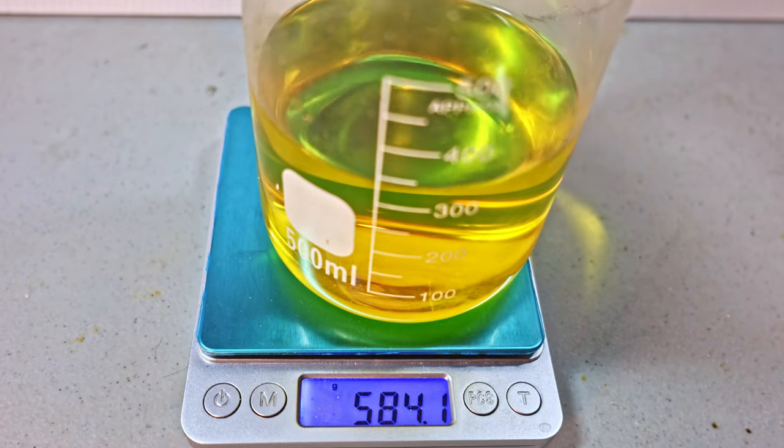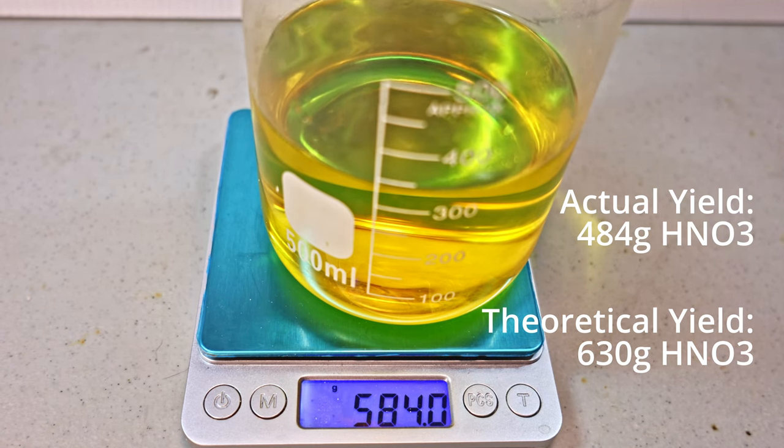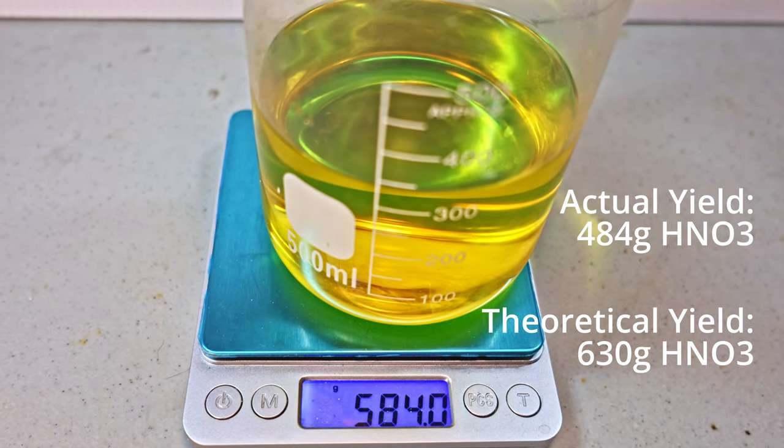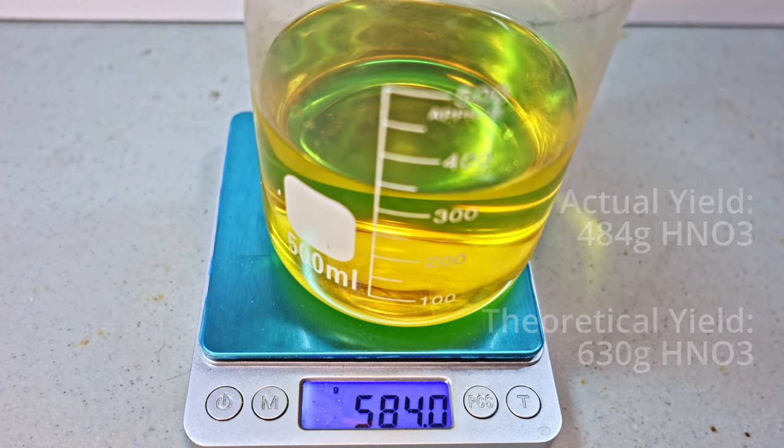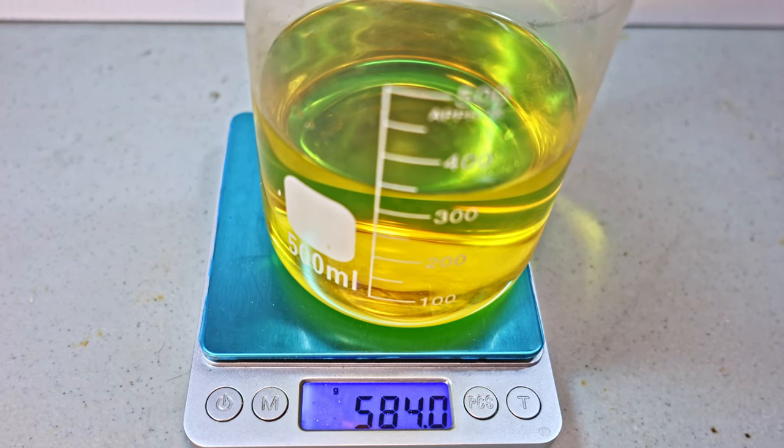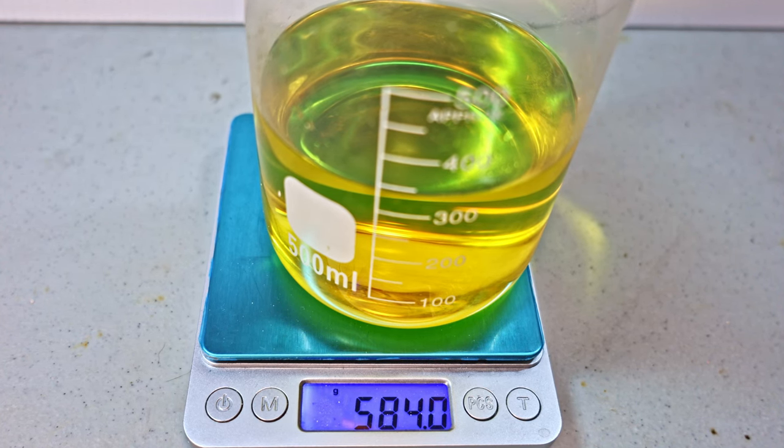584 grams. Now, if we subtract away the beaker and do some fancy math, we come out with 7.7 moles of nitric acid. That is a 77% yield. Very good. Not bad. I would hope it would be better, but still, very good. A lot of nitric acid for what we did.